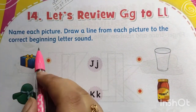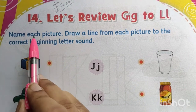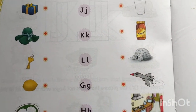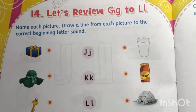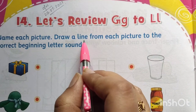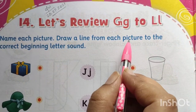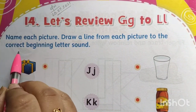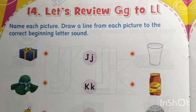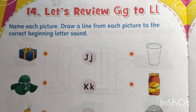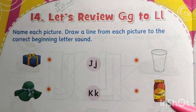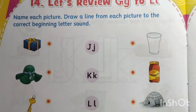Let's review G to L, from page number 24. See what is given here. The heading says: name each picture — you can see the pictures and you have to give each one their name. Then draw a line from each picture to the correct beginning letter sound.